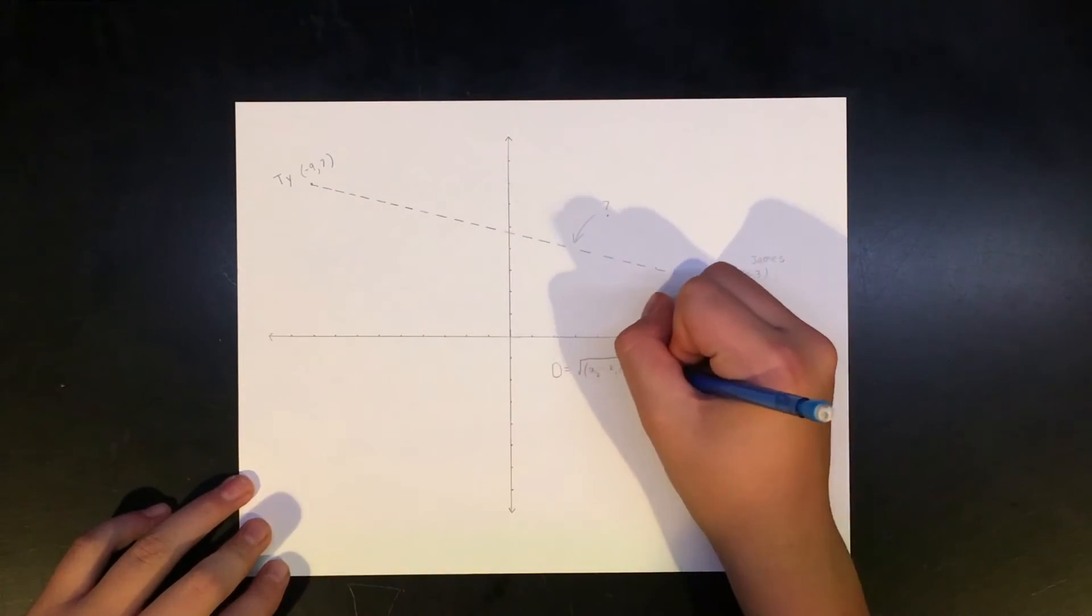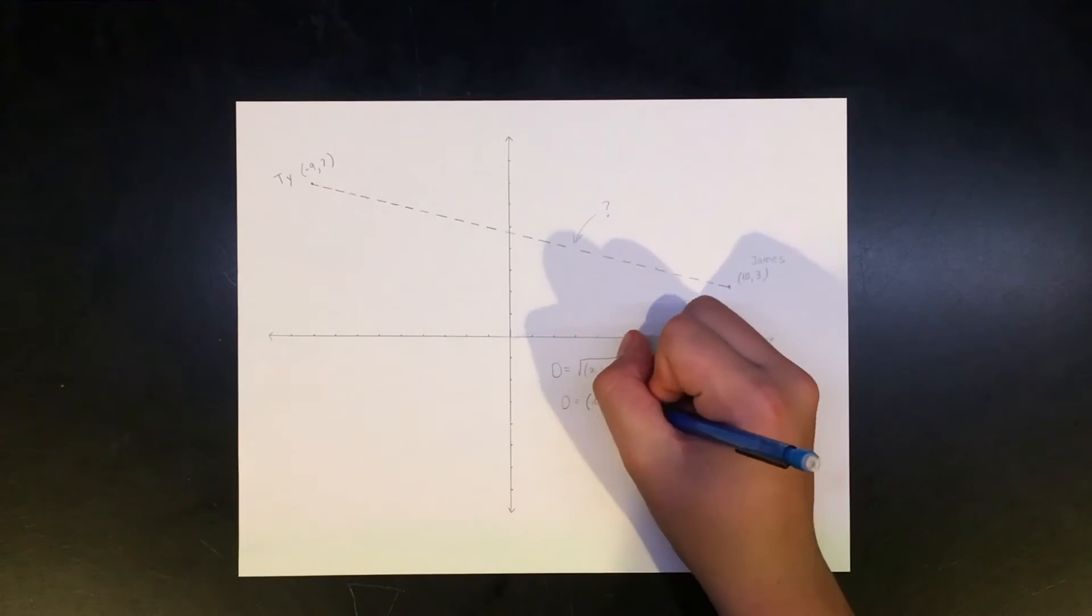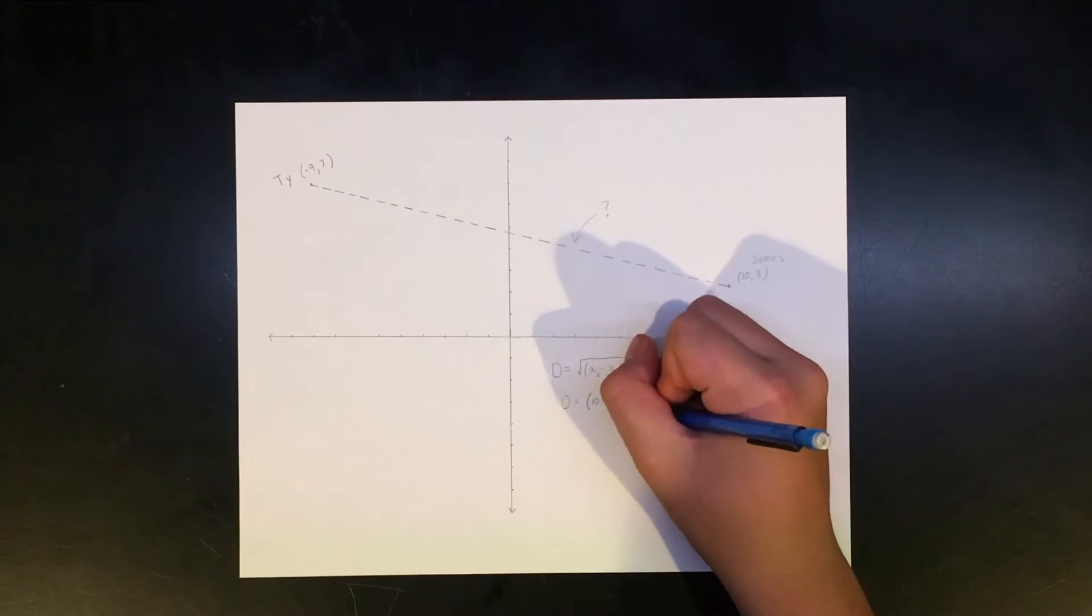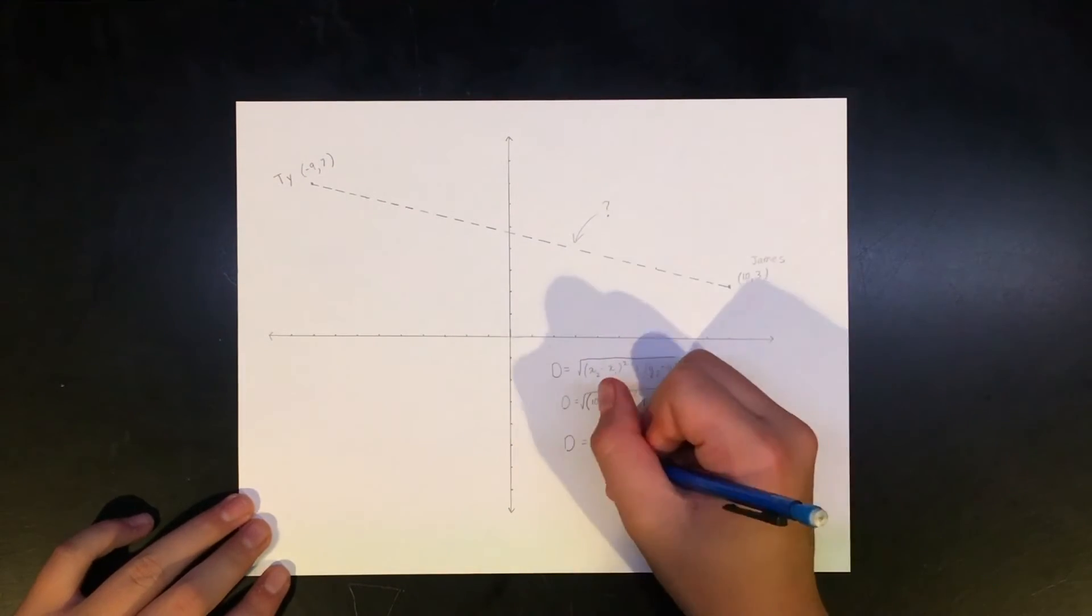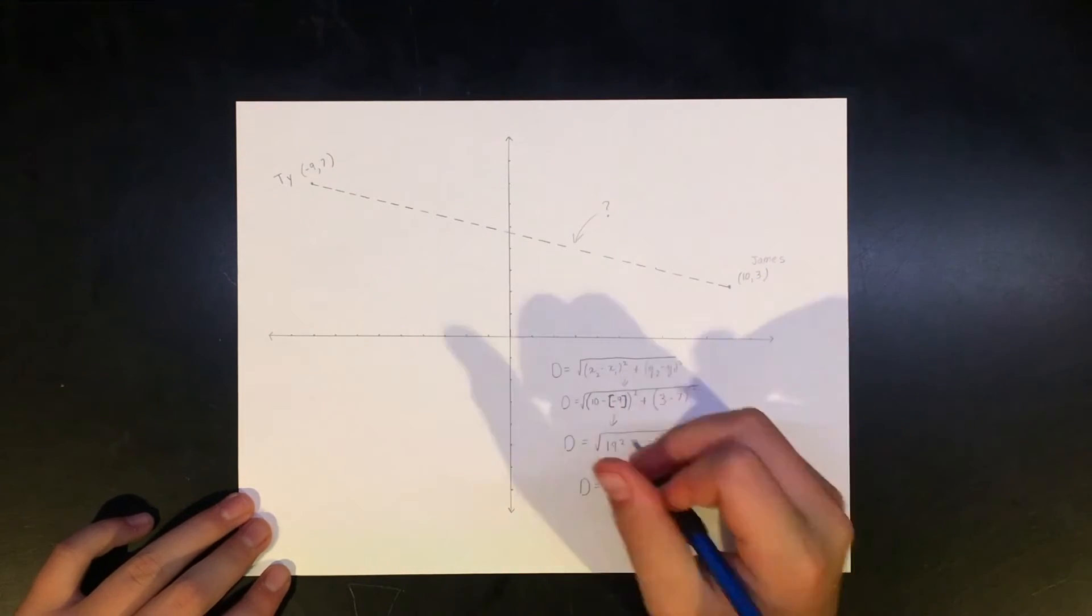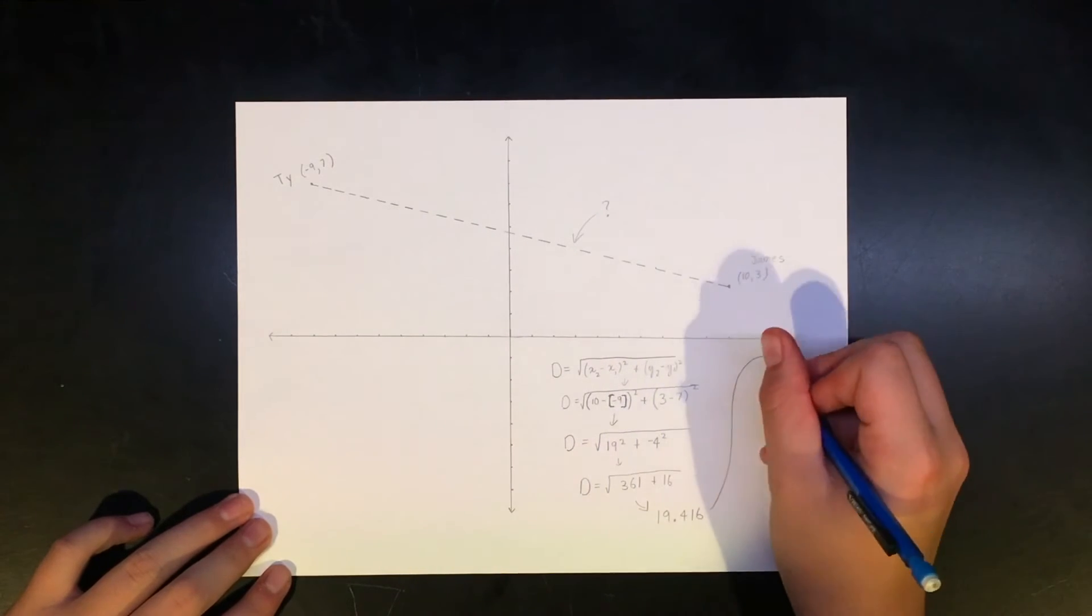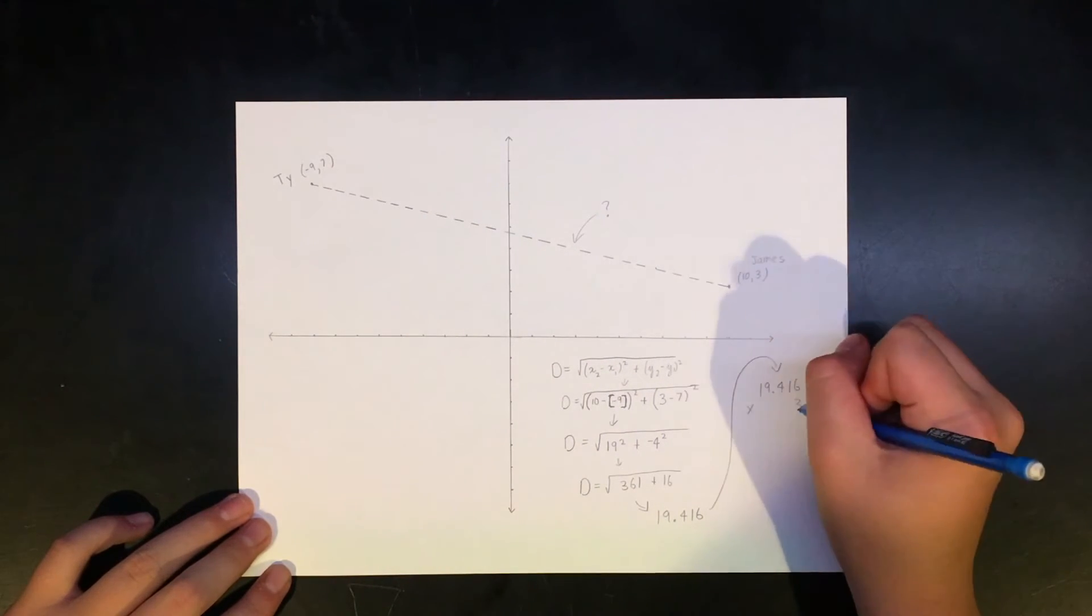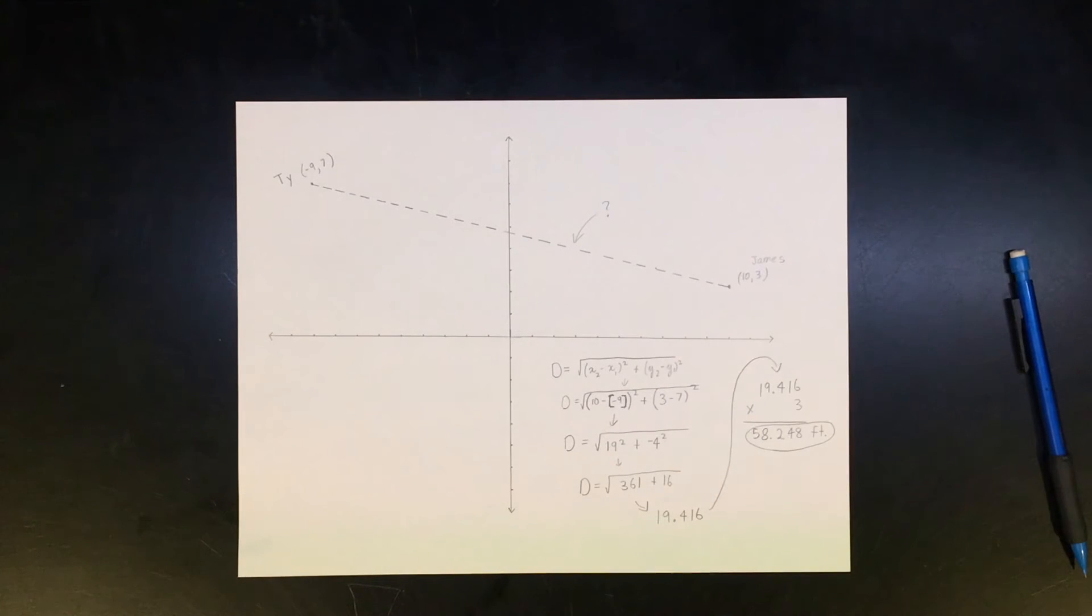The first thing to find is the difference in x and y. Take 10 and subtract negative 9 to get 19 and take 3 and subtract 7 to get negative 4. Now square both numbers to get 361 and 16. Add these two numbers together and square root and you should get 19.416. Now multiply by 3 to get the final answer that Ty is 58.248 feet from his friend James.